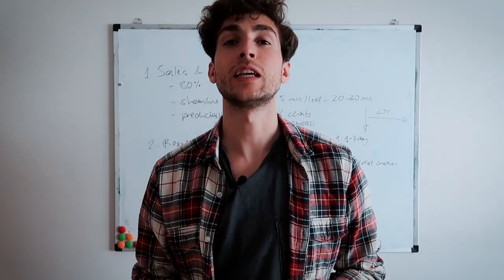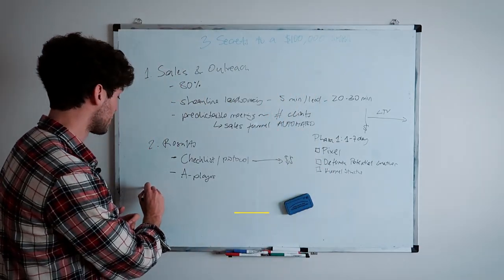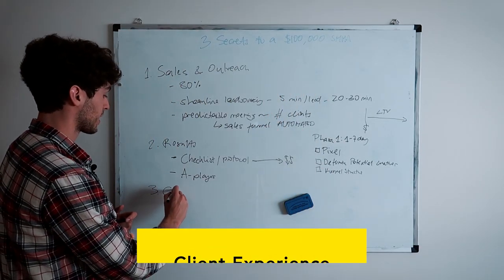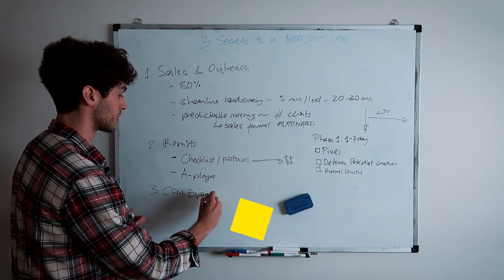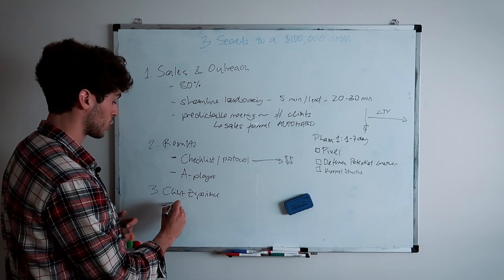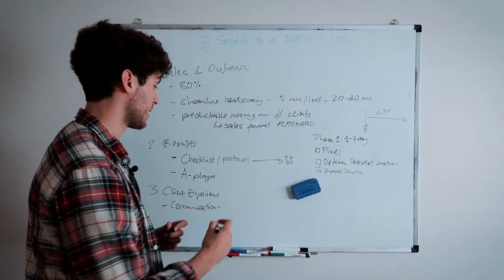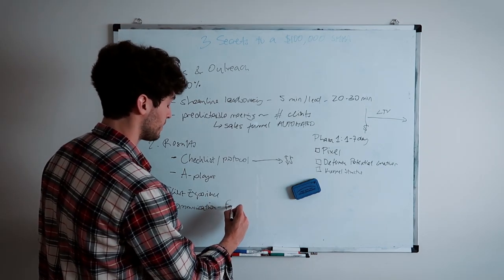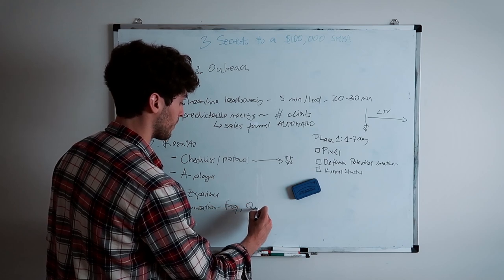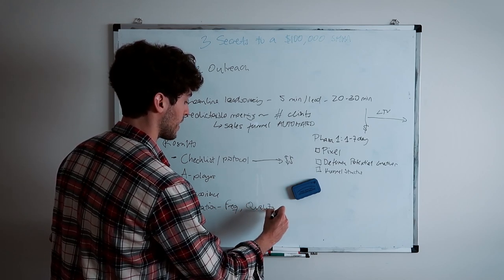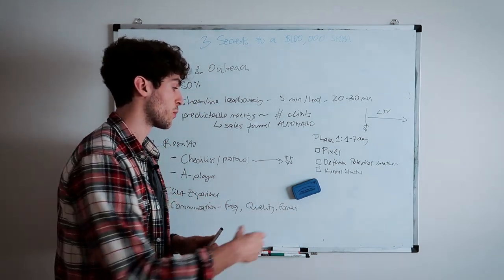And the third secret, the third key to building a six-figure SMMA is making sure that you have the client experience on point. Client experience. And there's mainly two key components in this. The first one is communication. And for communication, there's really three variables that you need to keep in mind. The first one is the frequency. The second one is the quality. And the third one is the format. Let me explain what these mean. Let's actually start with formats.